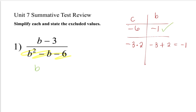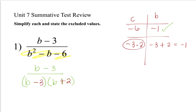Let us write the factored form: B minus 3 over B minus 3 and B plus 2. We got the numbers negative 3 and plus 2 from the factors we found. If you take a look at what we have, the expression in the numerator is exactly the same as the denominator. So we can cancel those two out, and that would leave us with 1 as the numerator over B plus 2.